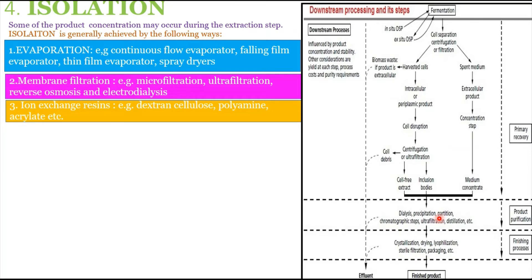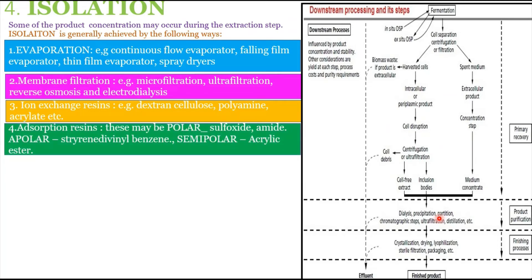Ion exchange resins are also used in isolation — for example, dextran-cellulose, polyamide, and acolyte. Adsorption resins may be polar, apolar, or semi-polar: polar examples include sulfoxide and amide; apolar examples include styrene-divinylbenzene; and semi-polar types include acrylic esters.